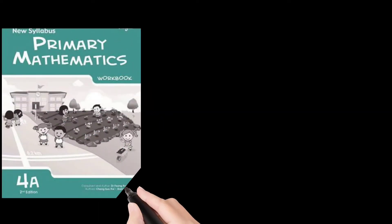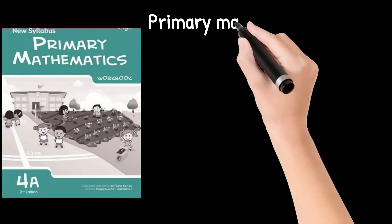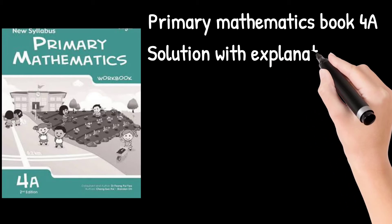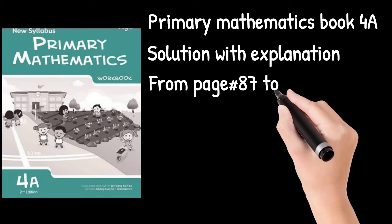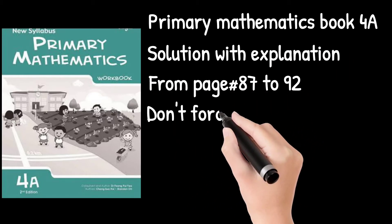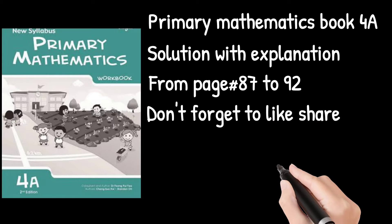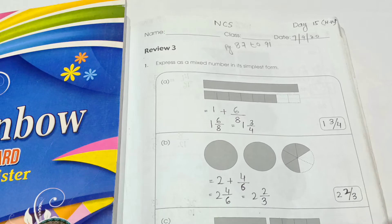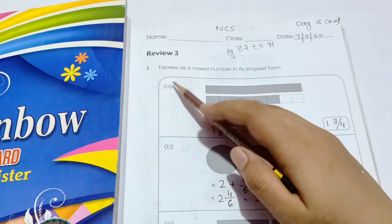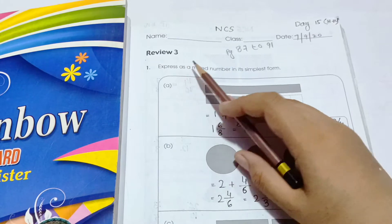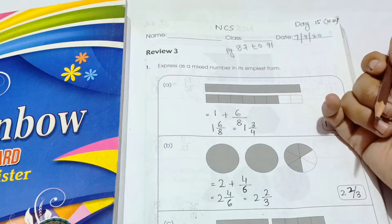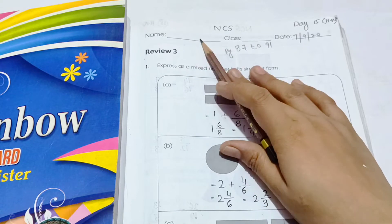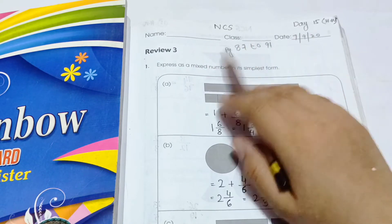Hi everyone, today we are going to solve Primary Mathematics Book 4A from page number 87 to 92. We are going to solve Review 3 of Chapter 3 from page number 87. So let's start. First you have to write your name, class and date.